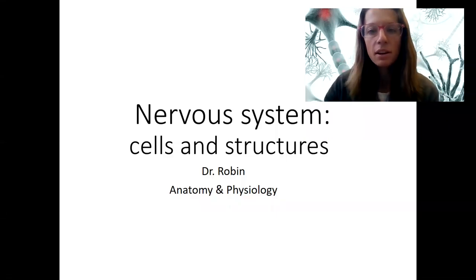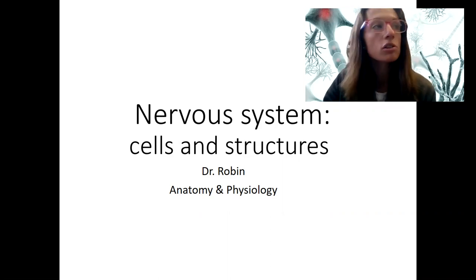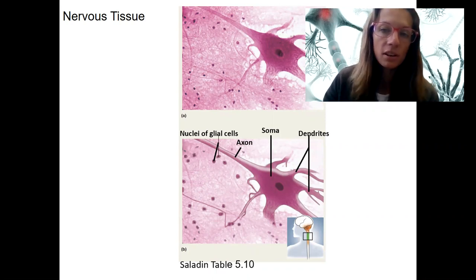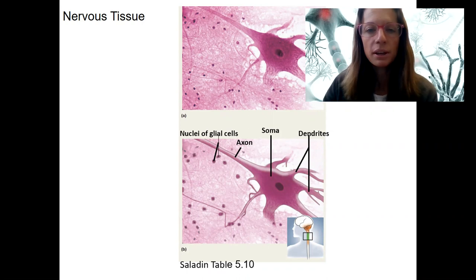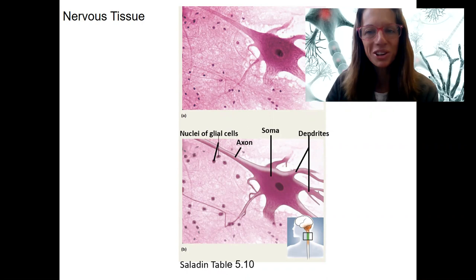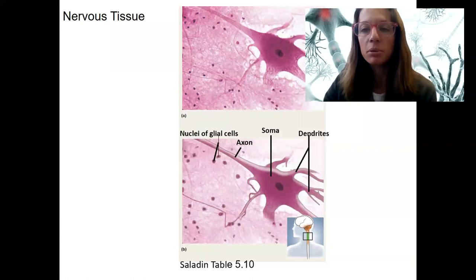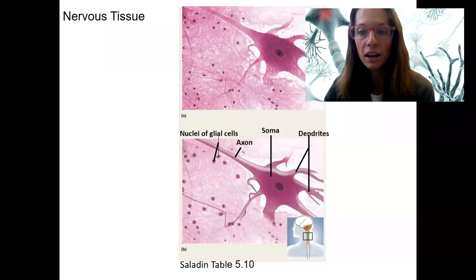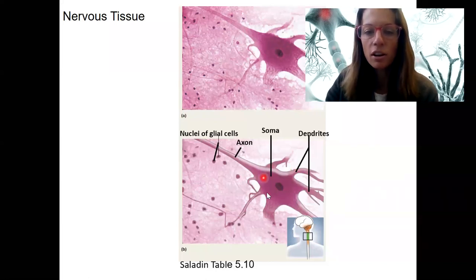Let's get into some detail on the cells and structures of the nervous system. The main cell we will focus on as part of the nervous system are neurons. These are the excitable cells that are able to fire action potentials and allow our nervous system to communicate. This is the neuron, and there are some components of the neuron that I want you to know.